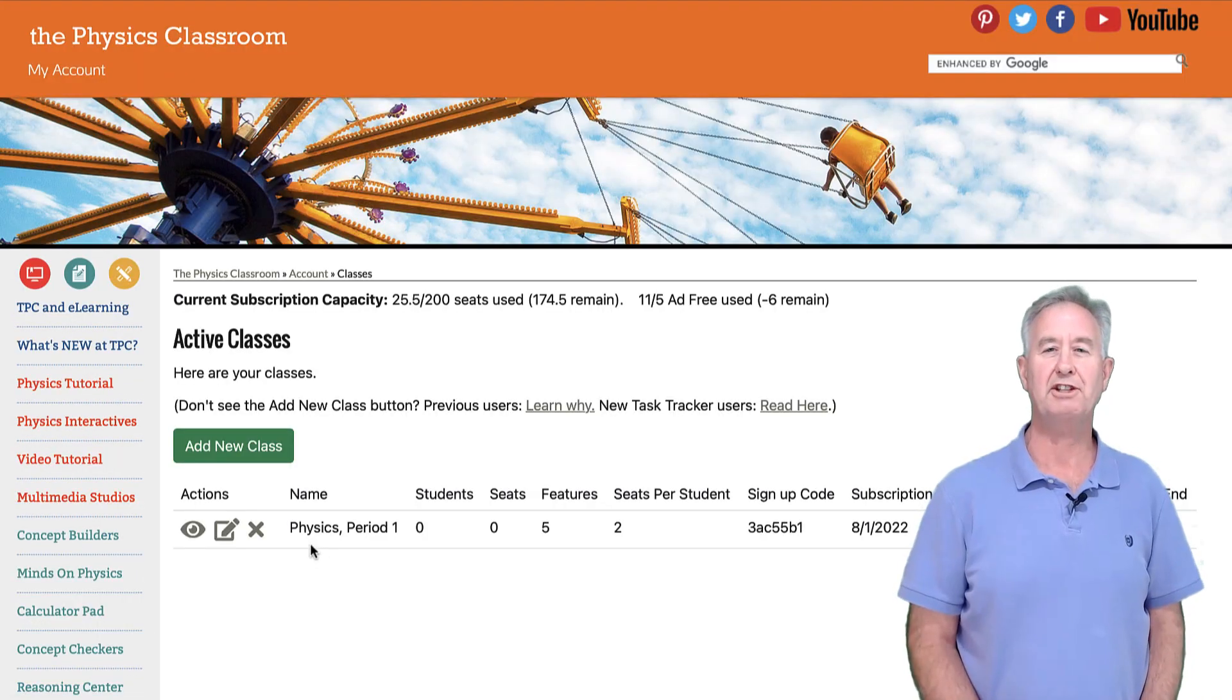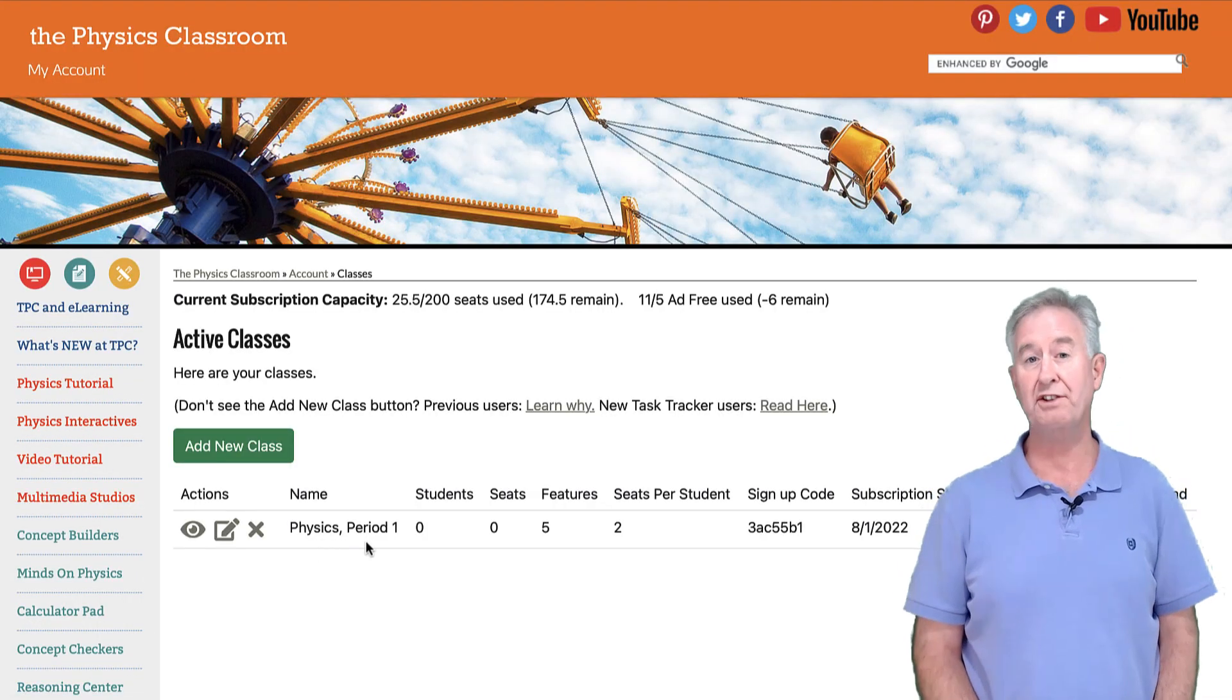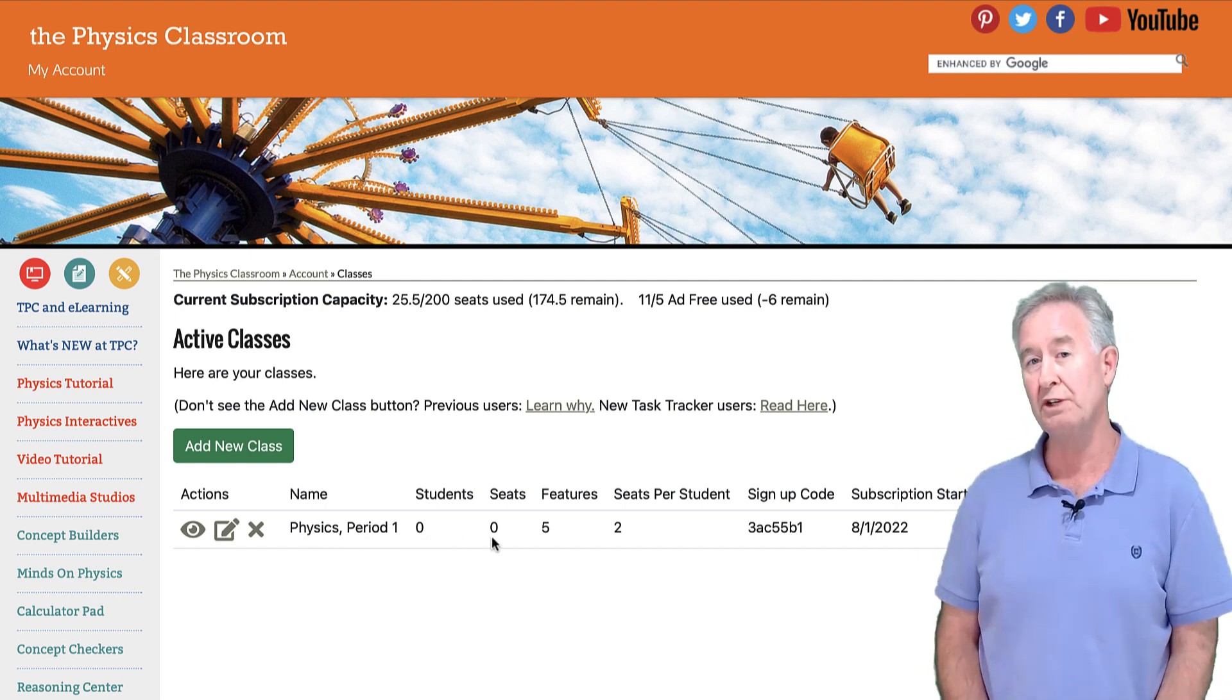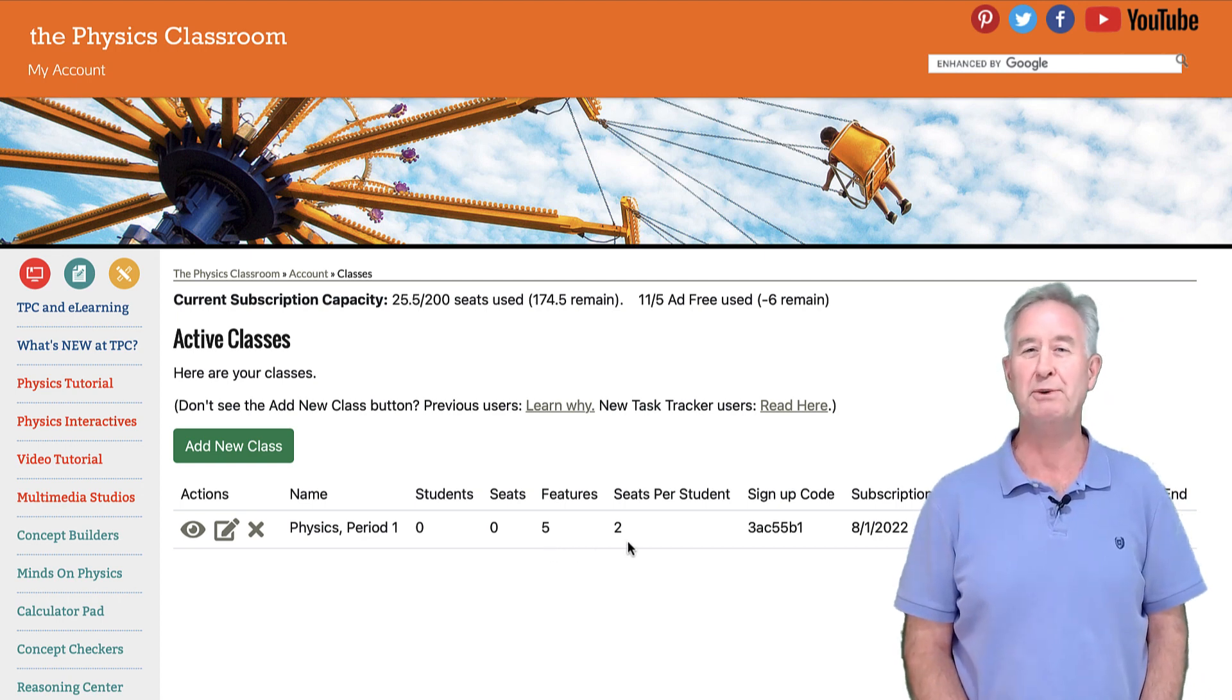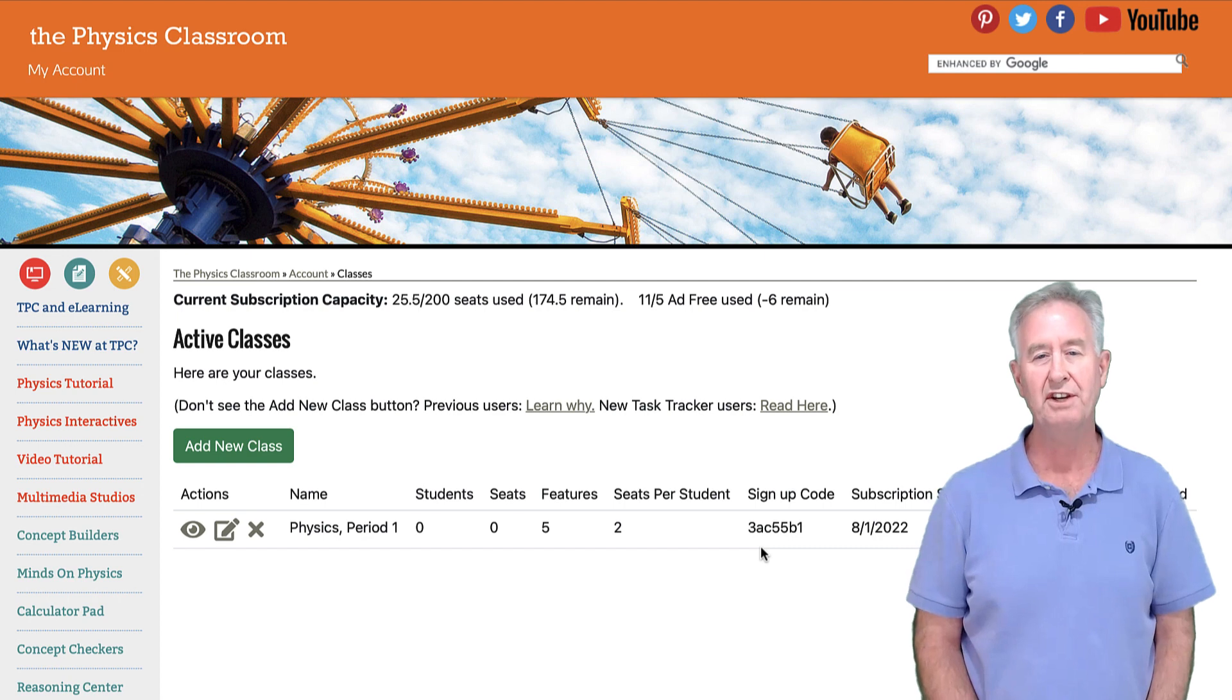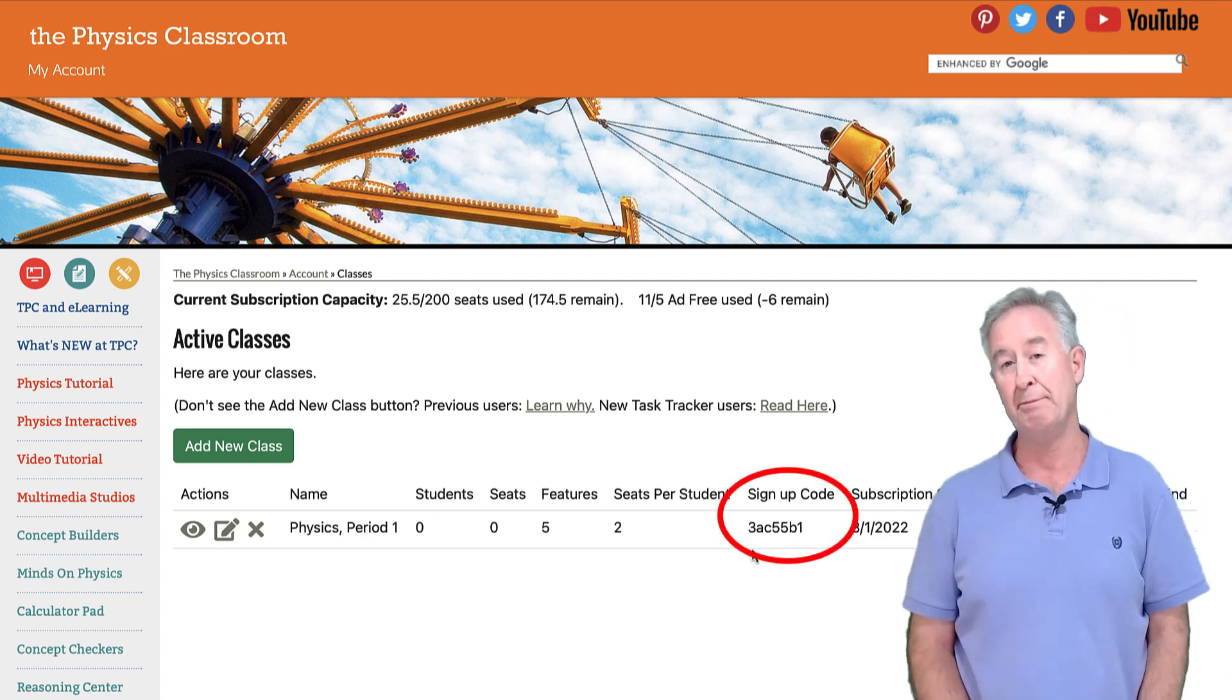Back on the Classes page, you'll now see your class listed along with some data about your class, like the number of students and the number of seats used per student who are enrolled in this class past the 20-day mark. It's now time to add students to your class. You'll notice there's a class sign-up code here.